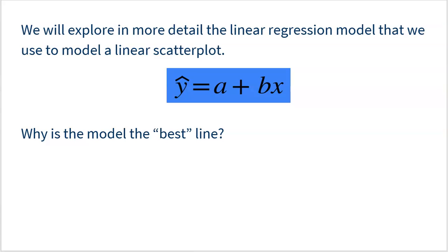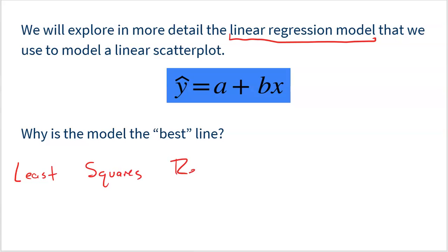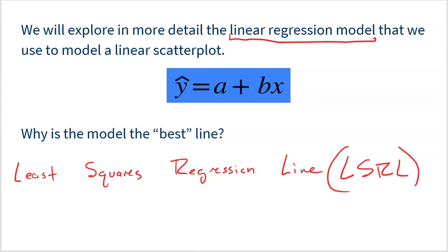So the question is, why is this the best line? We've called it the linear regression model, but I'm going to give you its full name. The full name is the least squares regression line, or LSRL. A lot of people just call it LSRL for short. Think of it like a nickname — the full name is the least squares regression line.